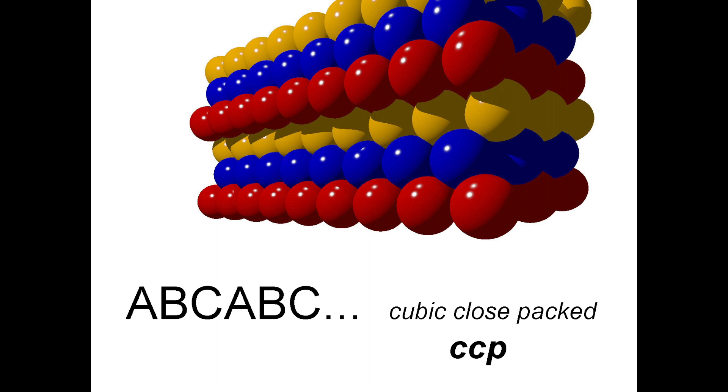Close packed structures comprised of layers alternating in positions A, B, C, A, B, C, and so forth are called cubic close packed, or CCP.